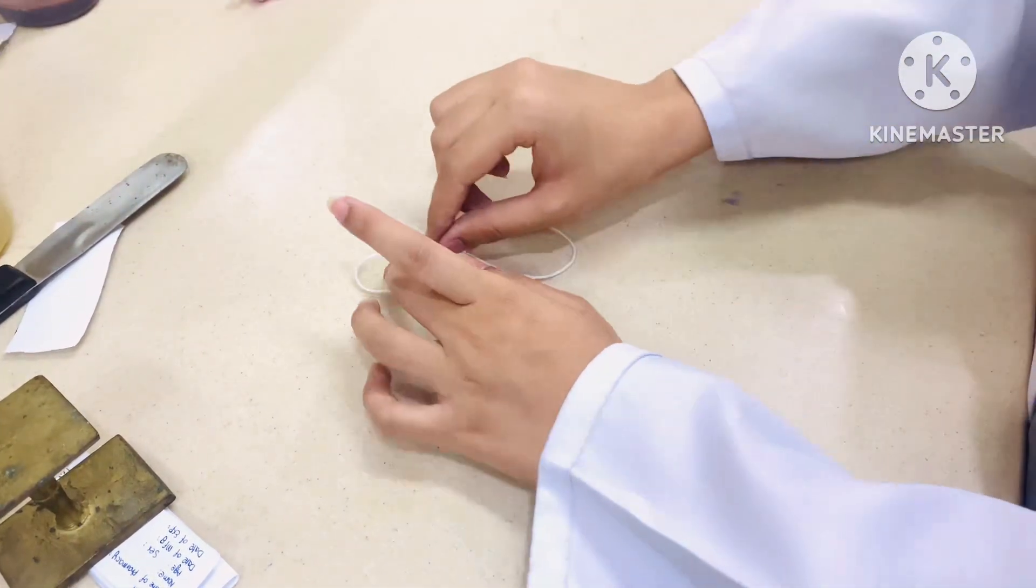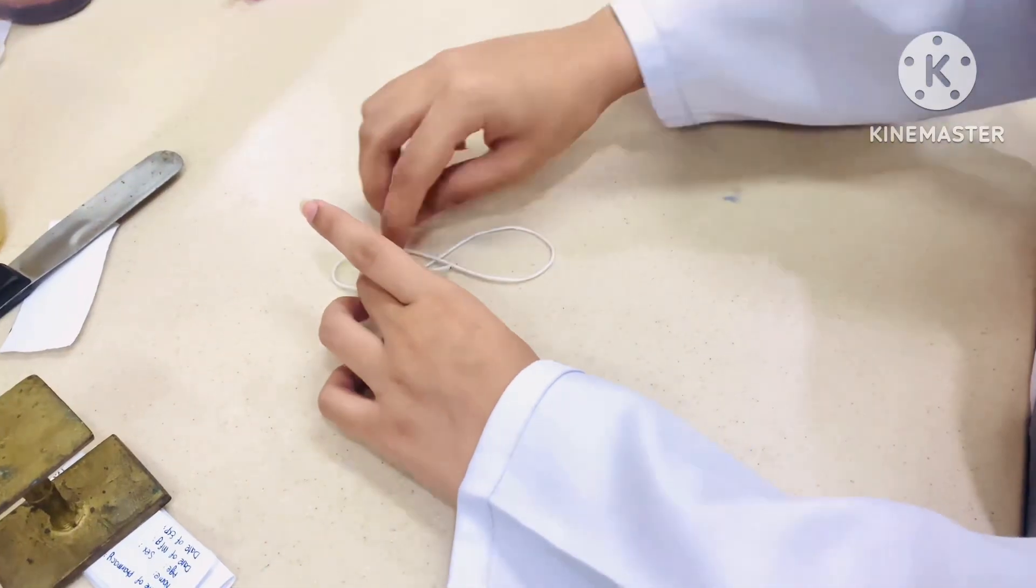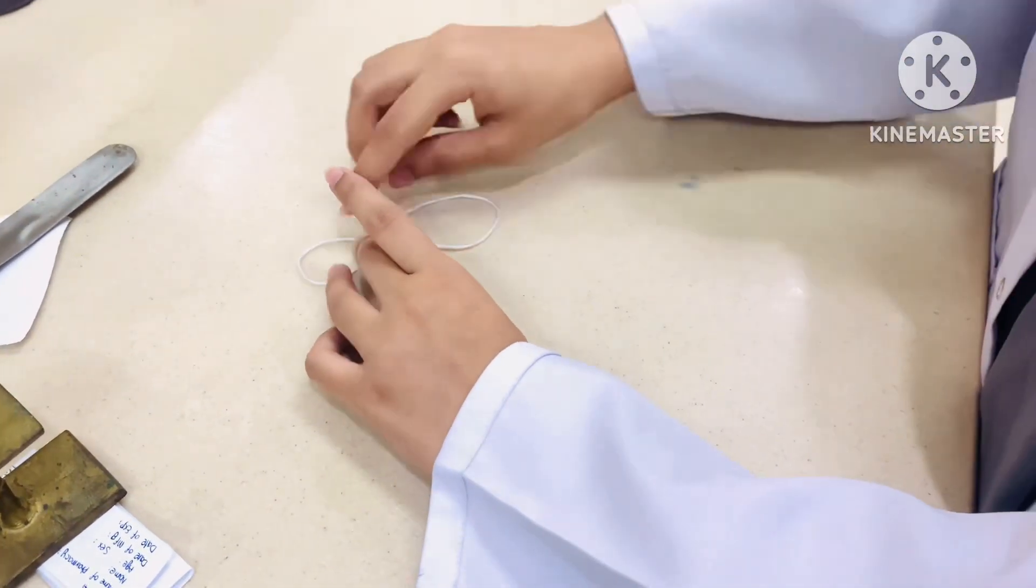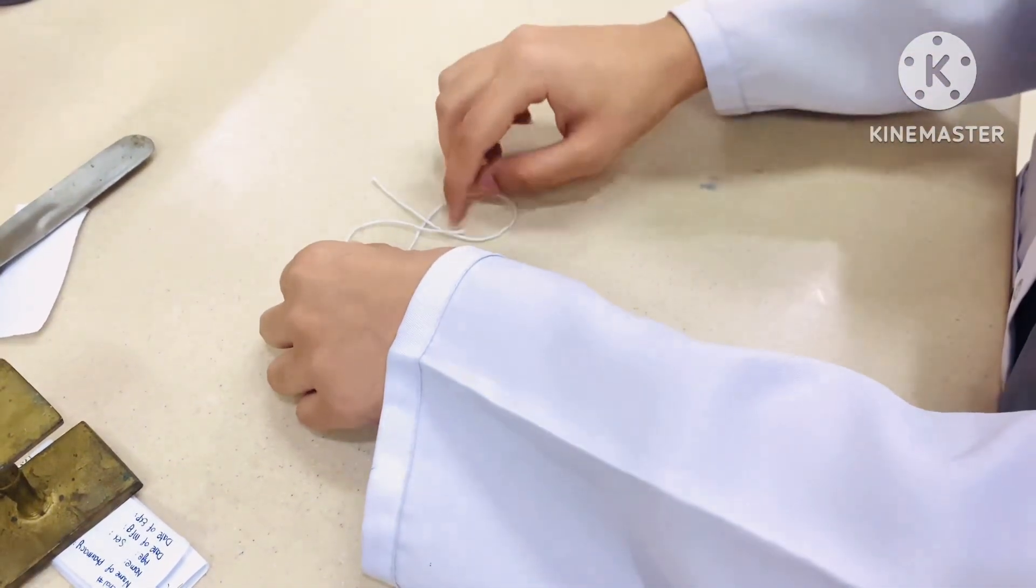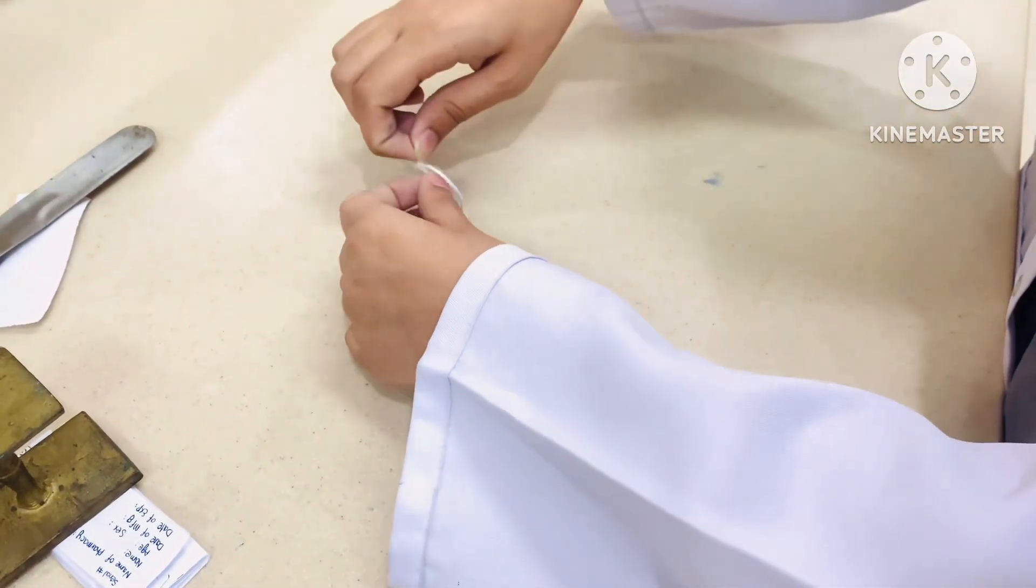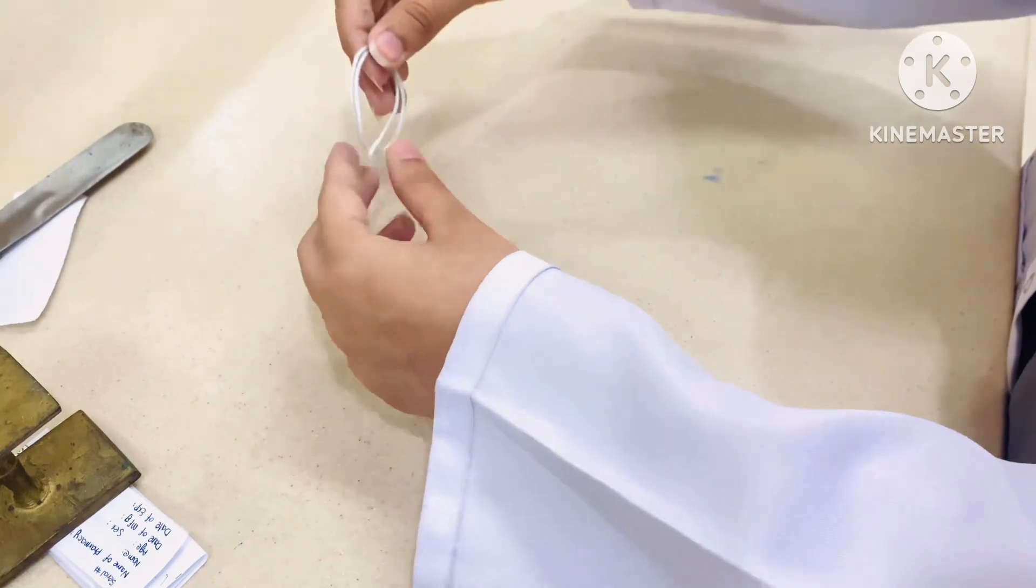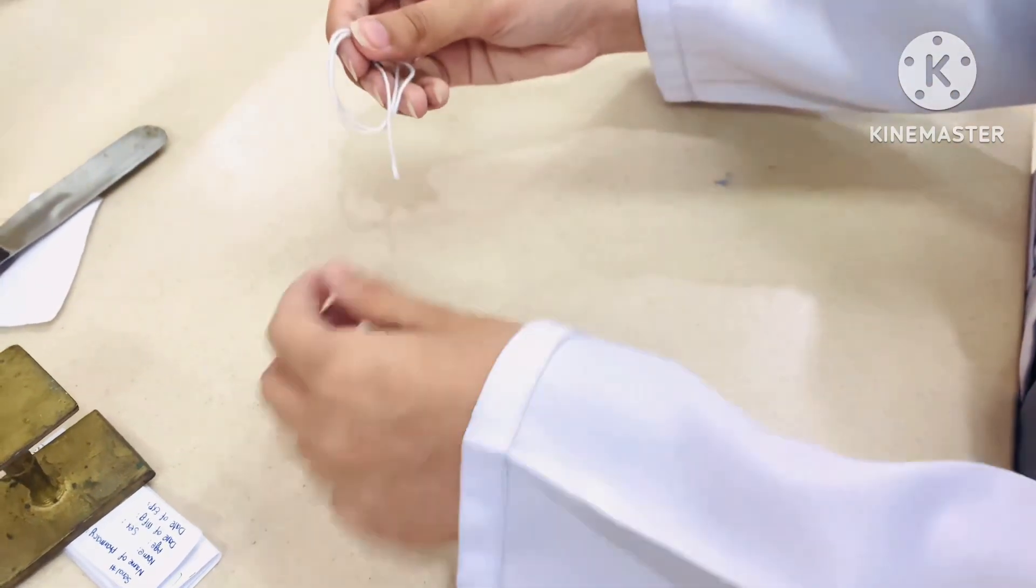For sealing, thread is applied to keep the label fixed in its position. For this purpose, a reef knot is applied which is easily open. We'll make the figure of eight, hold it carefully, and put it on the wrapped paper.